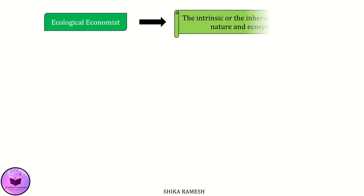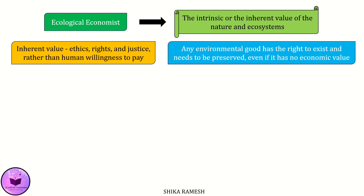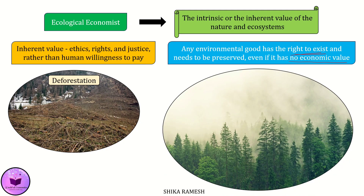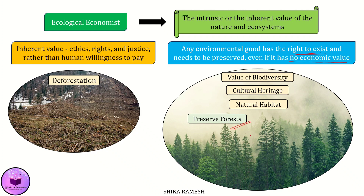On the other hand, an ecological economist focuses on the intrinsic or inherent value of nature and ecosystems. Inherent value is derived from ethics, rights and justice rather than human willingness to pay. It means that any environmental good, say a particular species, has the right to exist and needs to be preserved even though it has no economic value. In the context of deforestation, an ecological economist would argue that forests possess an intrinsic value beyond just their economic benefits, including the value of biodiversity, native cultural heritage and the sheer existence of ancient natural habitats. The ripple effects of deforestation, like impact on water table, nearby habitats and species, are given prime emphasis. An ecological economist may support preserving certain forest areas, as there is a limit to how much forest can be cut down without causing irreversible damage, irrespective of the potential economic gains.